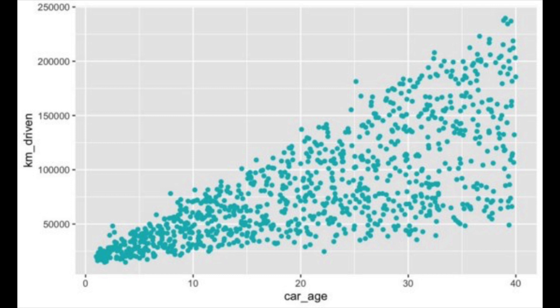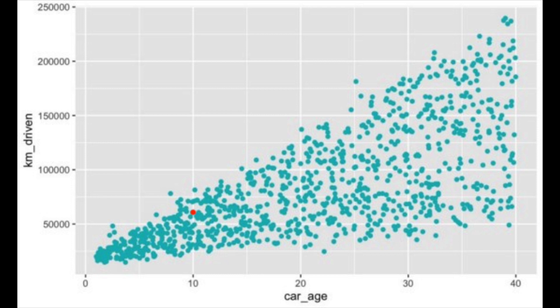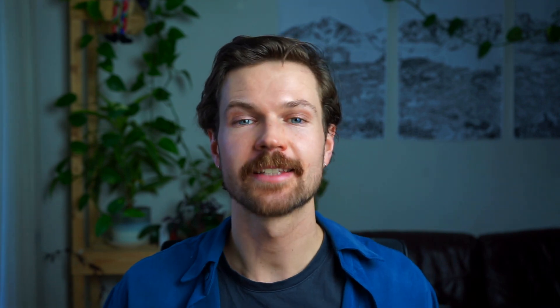Take the scatter plot of kilometers driven versus car age. These features are used to predict the price of a second-hand car. There is a clear correlation, which makes sense — the older a car, the more time we've had to increase its mileage. Now take the red observation: this car is 10 years old. Cars this age will have driven distances within the solid oval. When we train a model it only sees these realistic observations, yet when we calculate SHAP values we permutate the feature across its entire range. For kilometers driven, this includes unrealistic observations within the dotted oval, which can lead to unrealistic predictions and SHAP values.